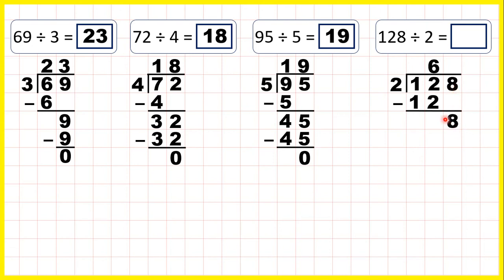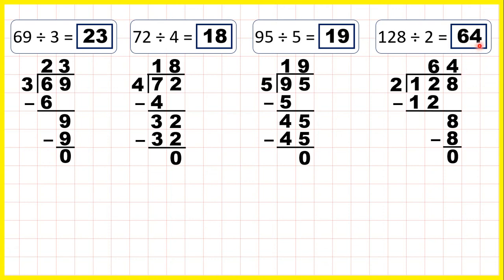So we have 8 divided by 2. Again 8 is in the 2 times table, so we can write 8 underneath. And because that's 4 times 2, 4 is the final digit of our answer. We can subtract to 0 to show that we don't have a remainder. So 128 divided by 2 is 64.